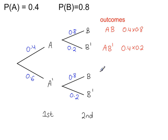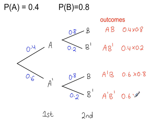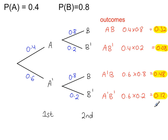A'B has probability 0.6 times 0.8, and A'B' has probability 0.6 times 0.2. I've worked out all the probabilities here. If you add them all together, you will get 1 as expected.